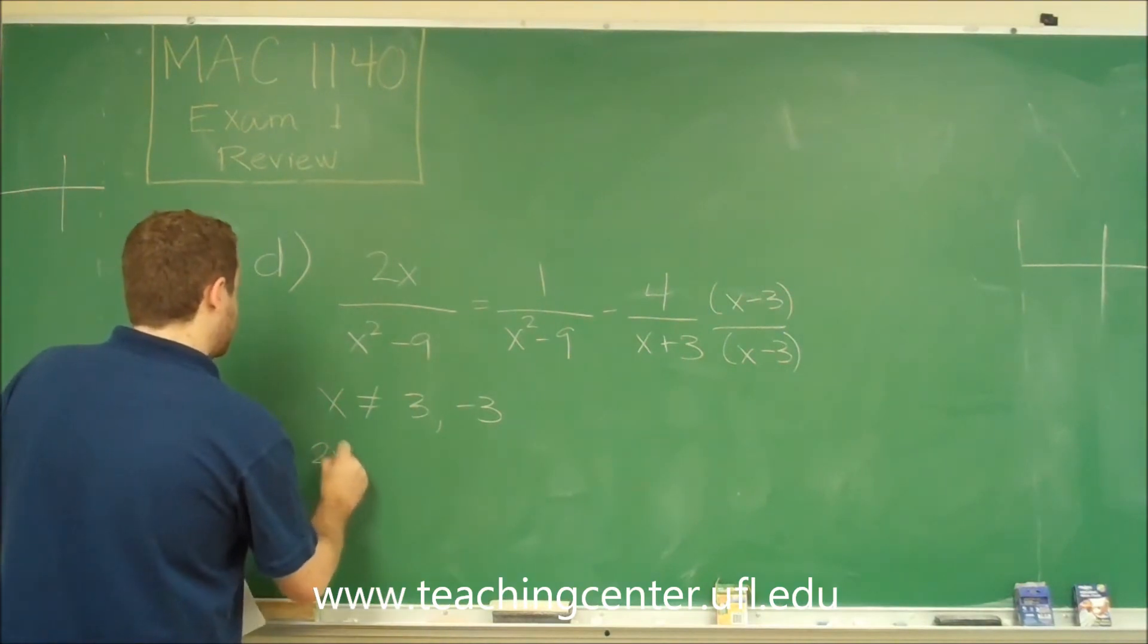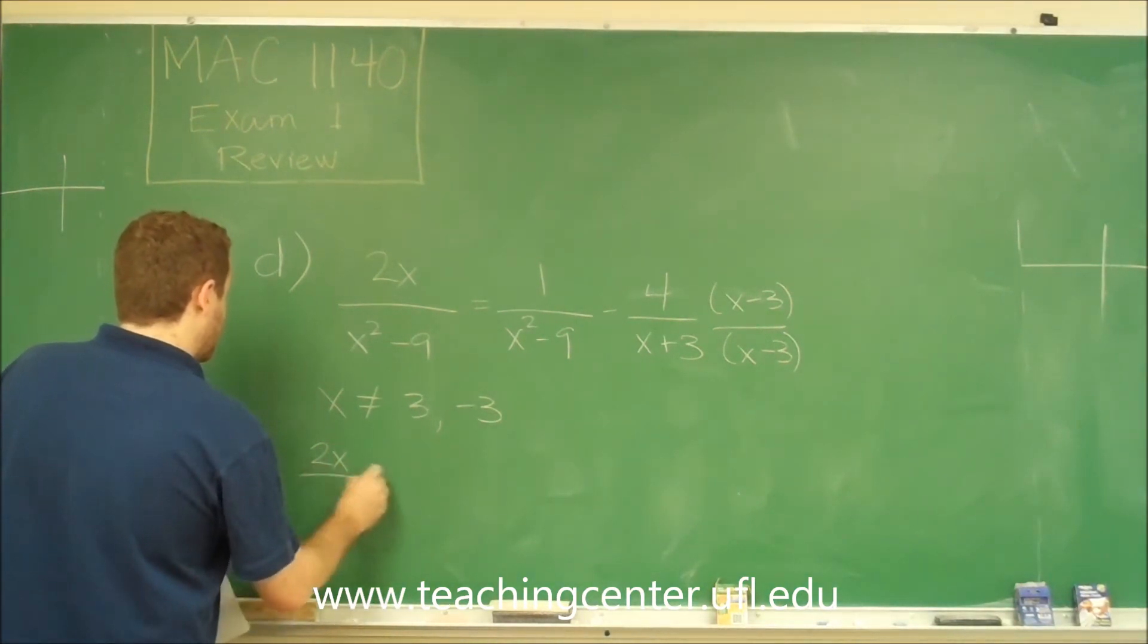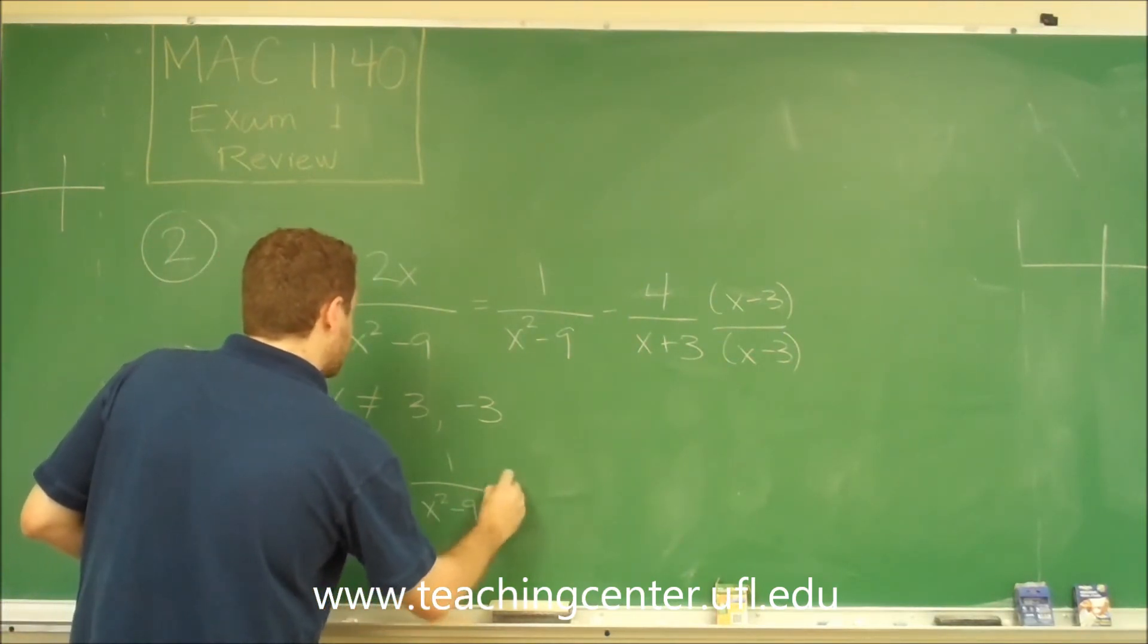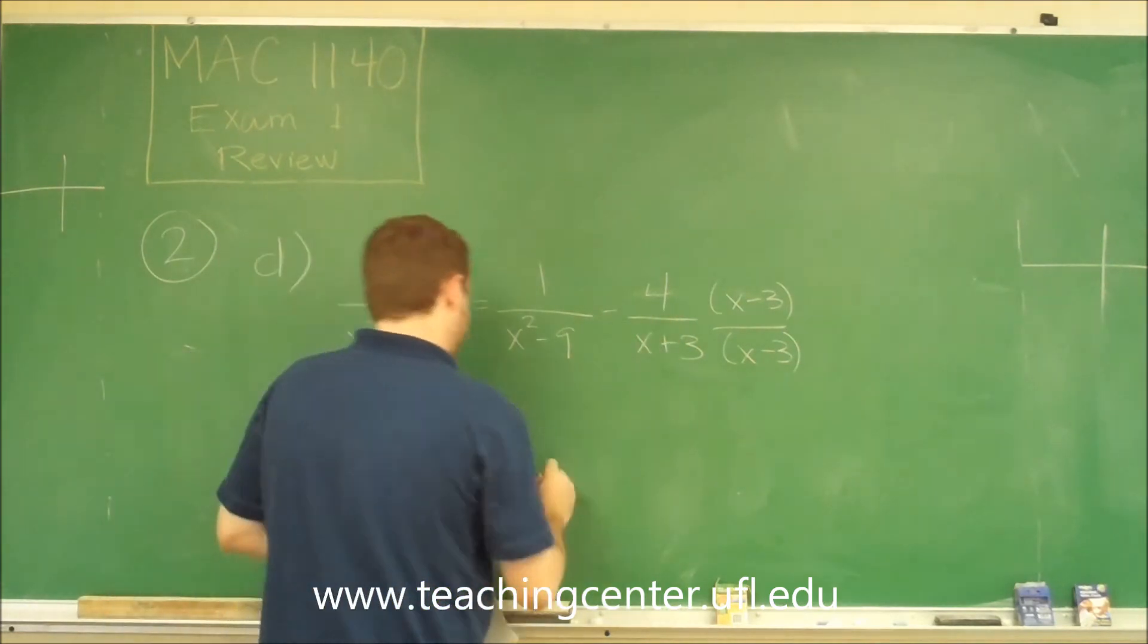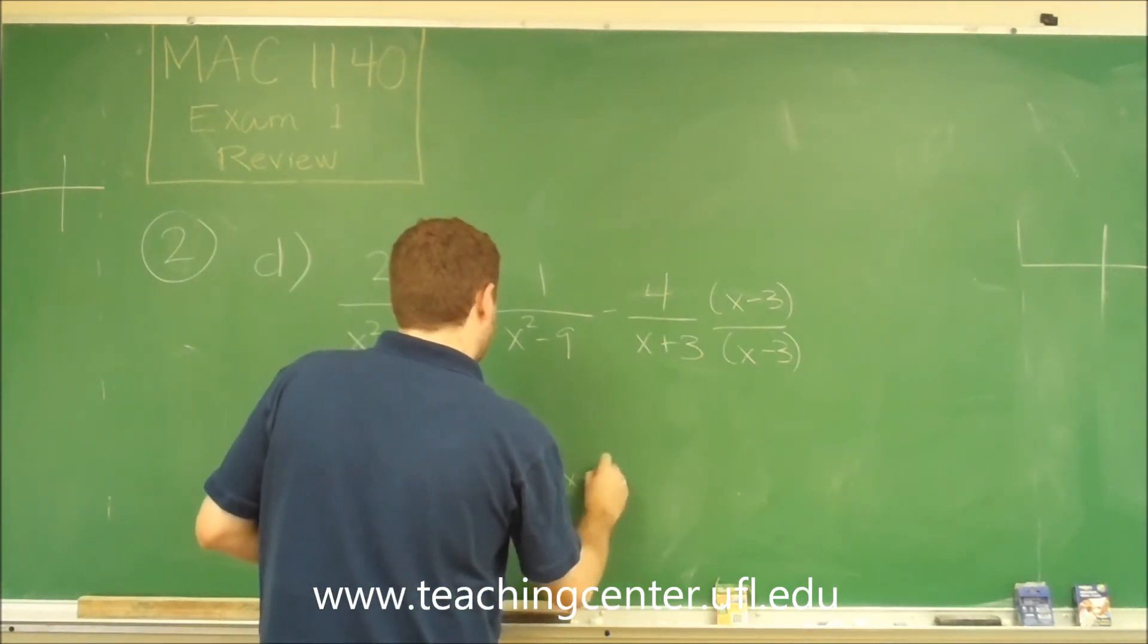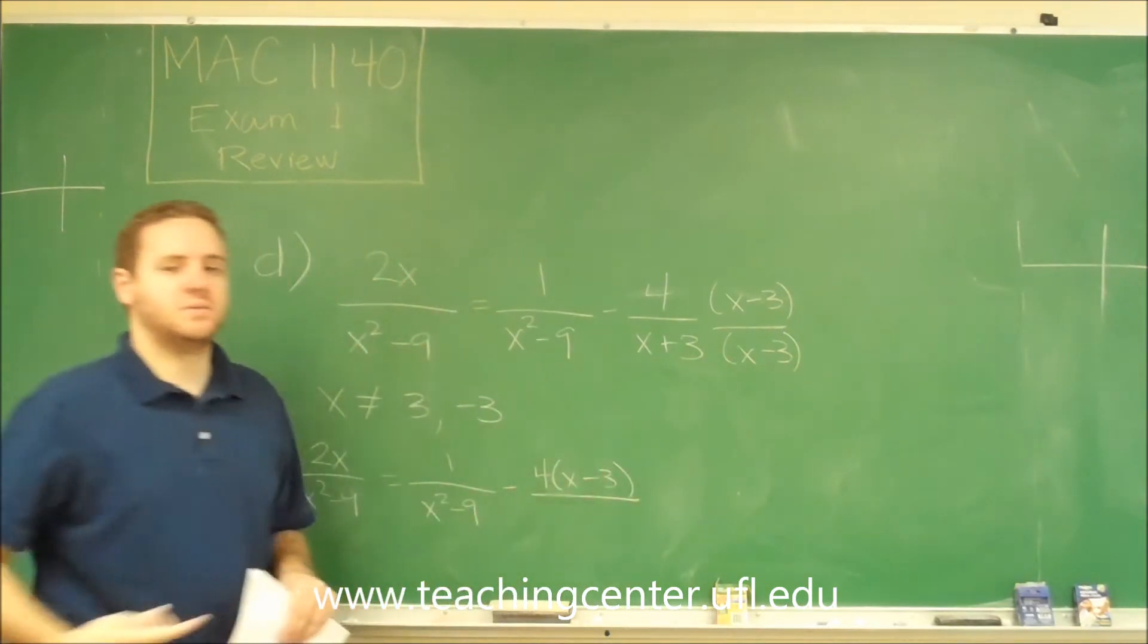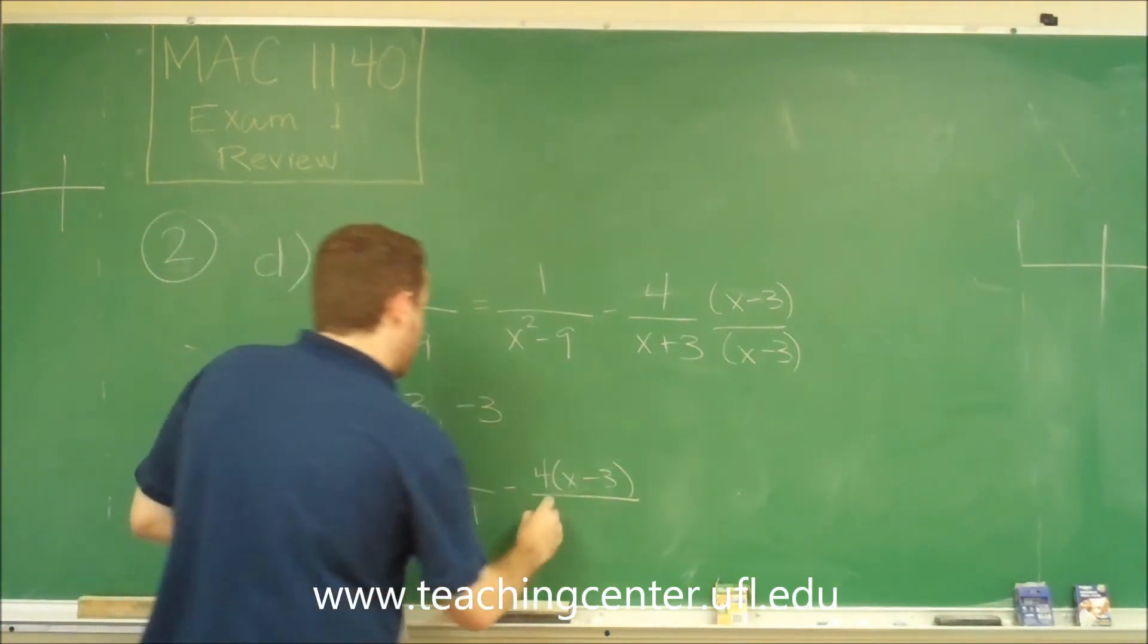So now we would have 2x over x squared minus 9 equals 1 over x squared minus 9 minus. So here we have 4 times x minus 3. Again, this times this x plus 3 times x minus 3 is x squared minus 9.